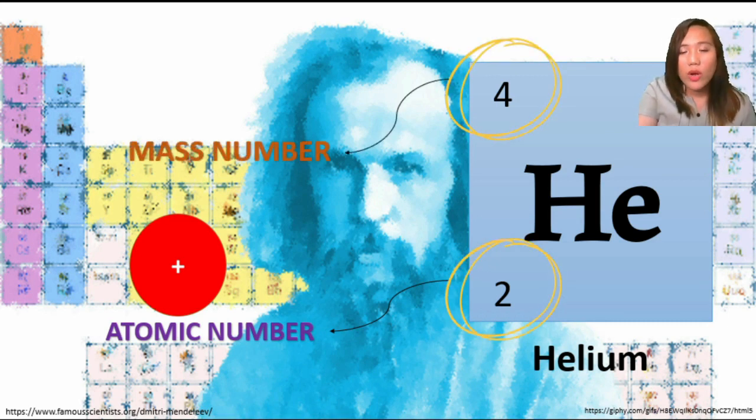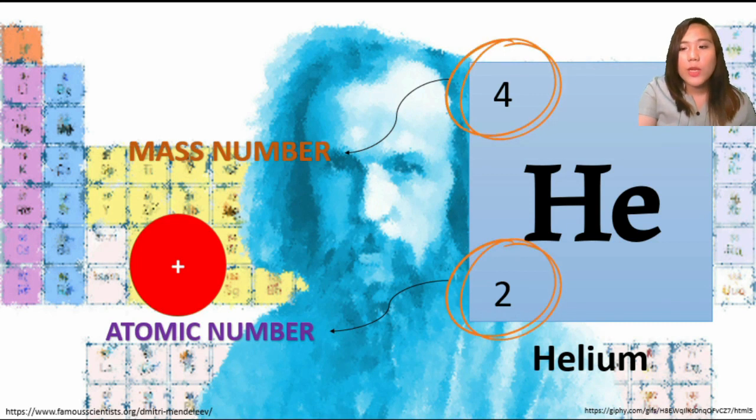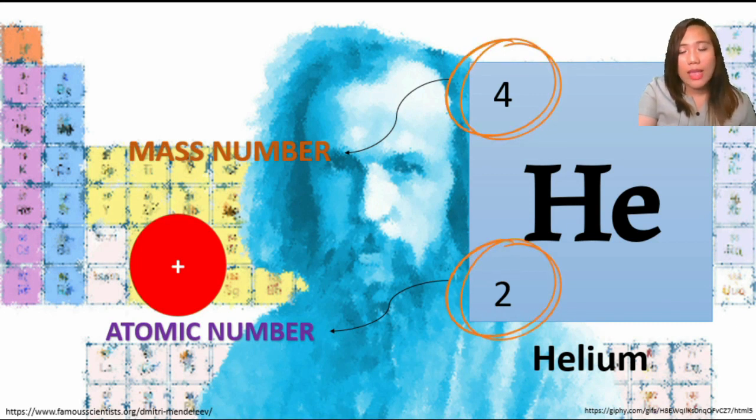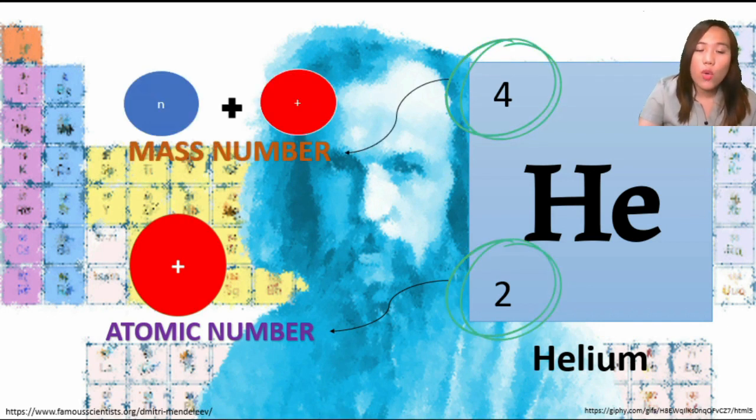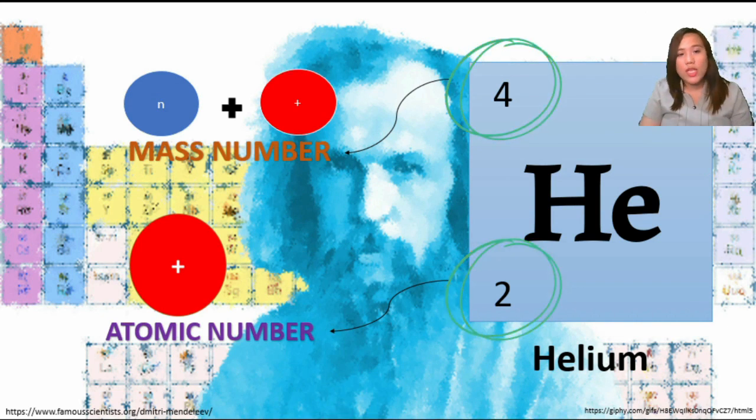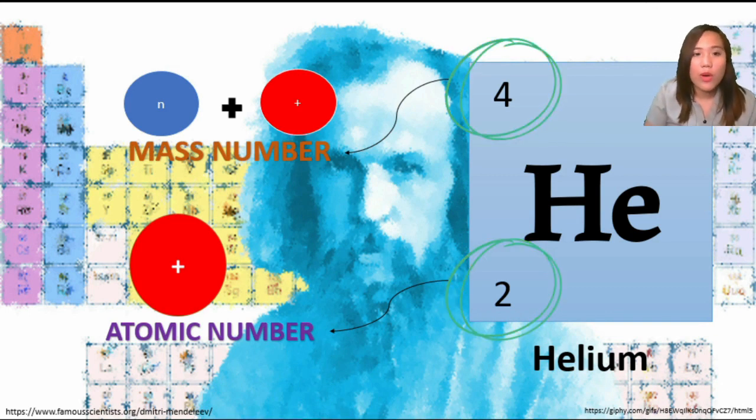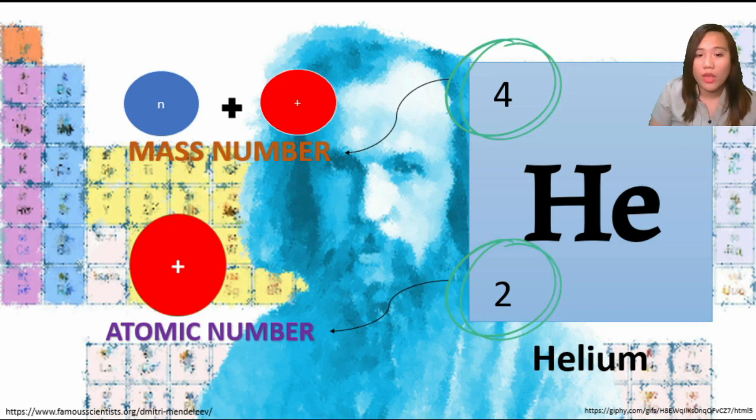The number above the symbol is called mass number or atomic mass. This number represents the weight of an element. If you're asked what is the mass number of an element, you just need to combine the number of neutrons and the number of protons. To find the number of neutrons, subtract the atomic number or protons from the mass number.